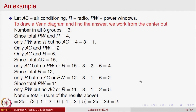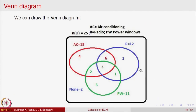Now, none = total minus the sum of all the above results. Adding: 3 + 1 + 2 + 6 + 4 + 2 + 5 = 23, so none = 25 − 23 = 2. In the Venn diagram, AC is red, R is blue, PW is green; the innermost region (all three) is 3; AC∩R = 6, AC∩PW = 2, R∩PW = 1; and the remaining 2 cars had none of the options. That is how Venn diagrams are used to understand and analyze such problems.